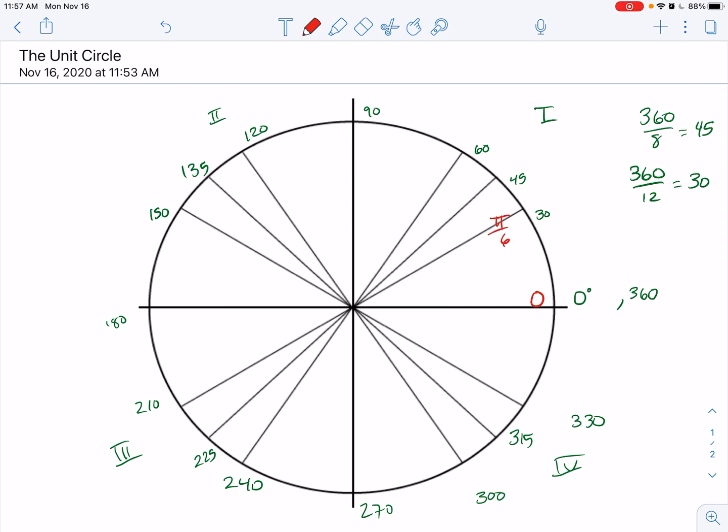And then we've got the pi over six family. So one pi over six, two pi over six reduces to pi over three. Three pi over six reduces to pi over two. Four pi over six reduces to two pi over three. Five pi over six. Six pi over six reduces to pi. Seven pi over six. Eight pi over six reduces to four pi over three. Nine pi over six reduces to three pi over two. Ten pi over six reduces to five pi over three. Eleven pi over six.